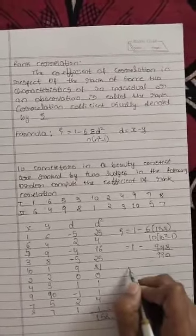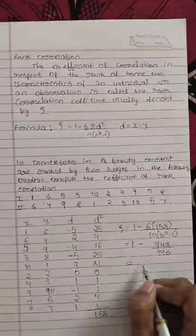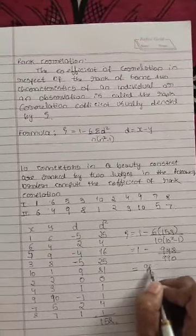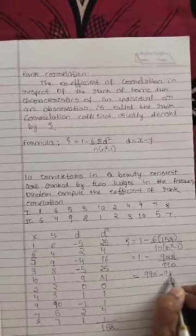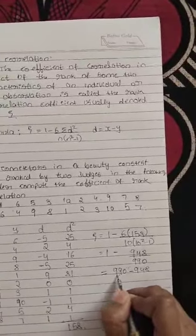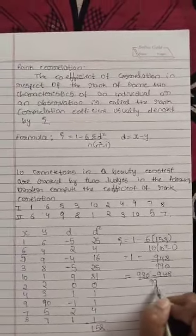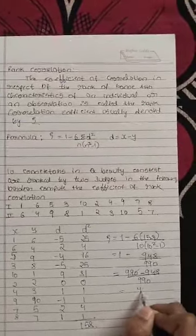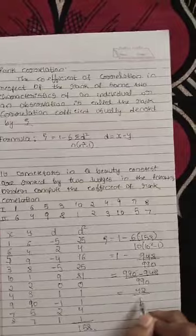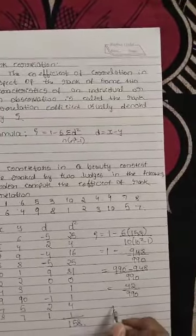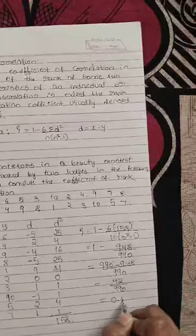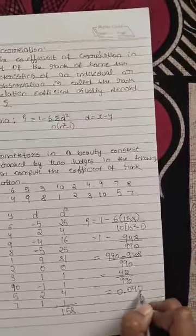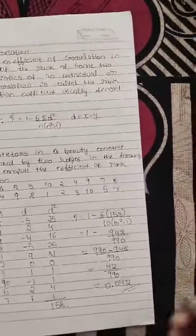By calculation, 990 minus 948 by 990. So 990 minus 948 is 42 by 990, so the answer is 0.042. Thank you.